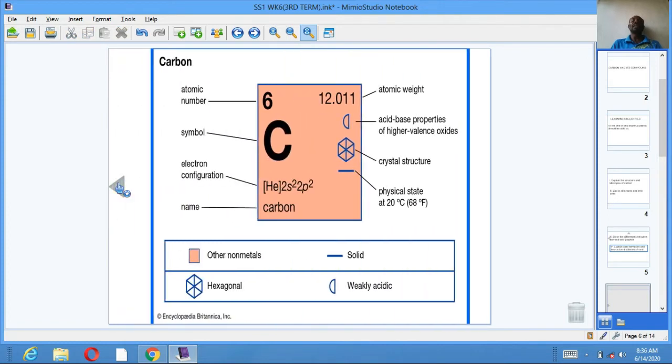Carbon is an element, a non-metal in group 4. Its atomic number is 6, while its atomic weight is 12. Its symbol is C. Its electron configuration is 1s2, 2s2, 2p2, or 2, 4.